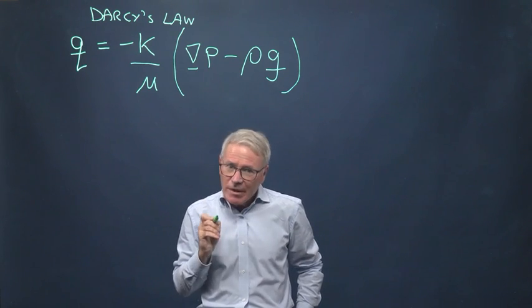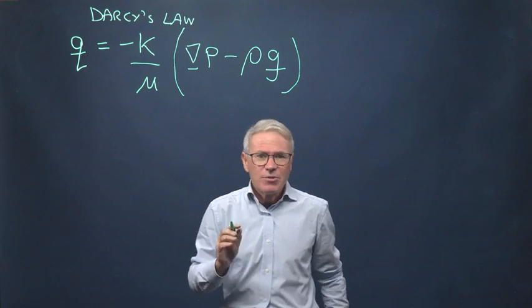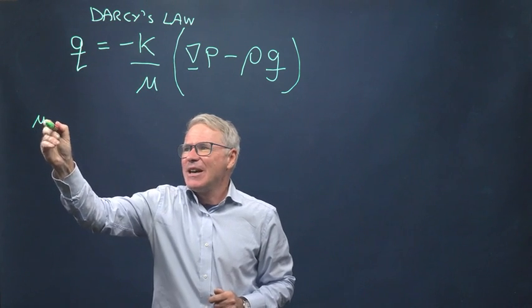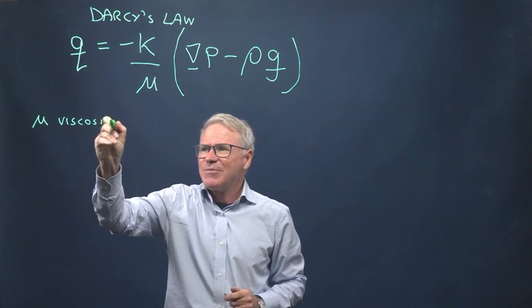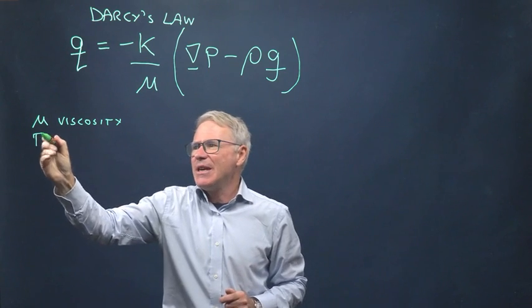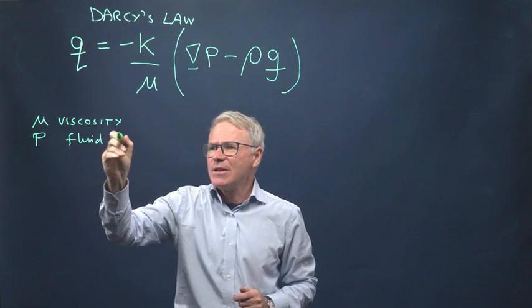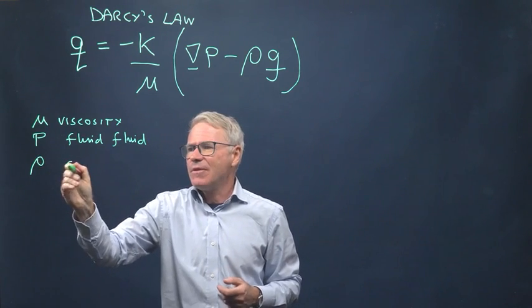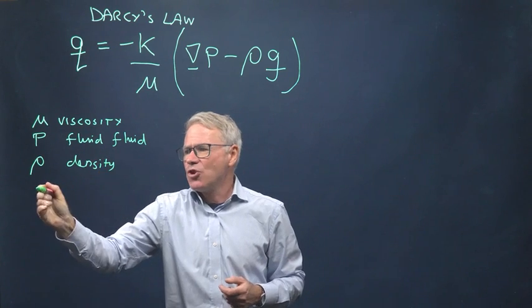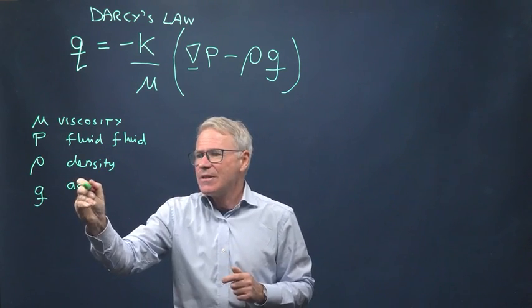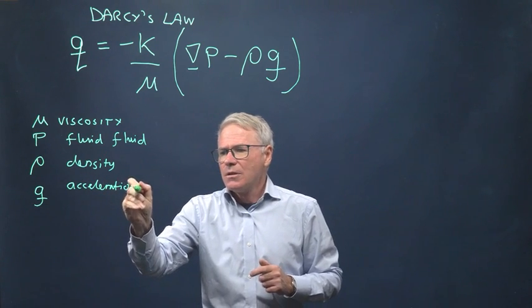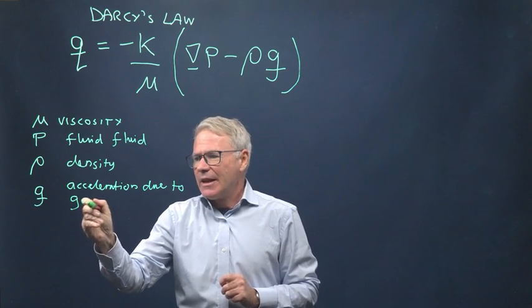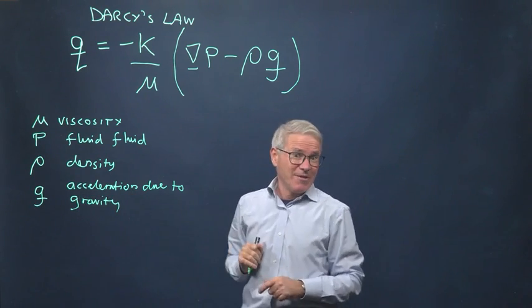What is Darcy's Law, though? Let's be very careful about the definition of the terms. There's the viscosity μ that was introduced in the Navier-Stokes equation. P is the fluid pressure, and you have flow in response to a pressure gradient. Rho ρ is the density of the fluid. And g, let's be a little bit more precise, this is the acceleration due to gravity, 9.81 meters per second squared. And it is a vector because it has a direction, obviously, vertically downwards.